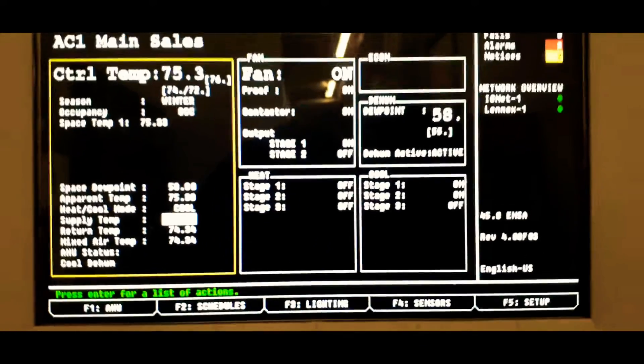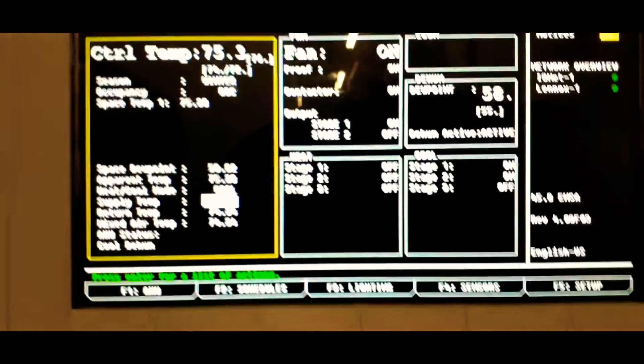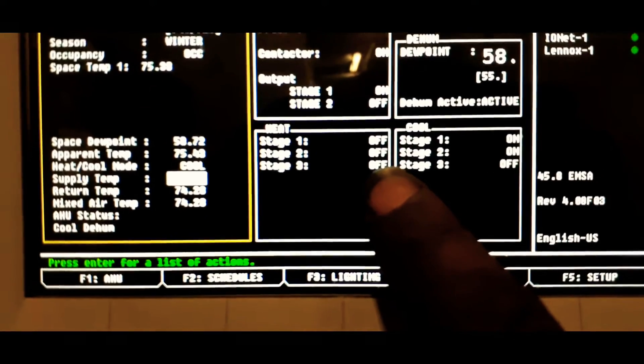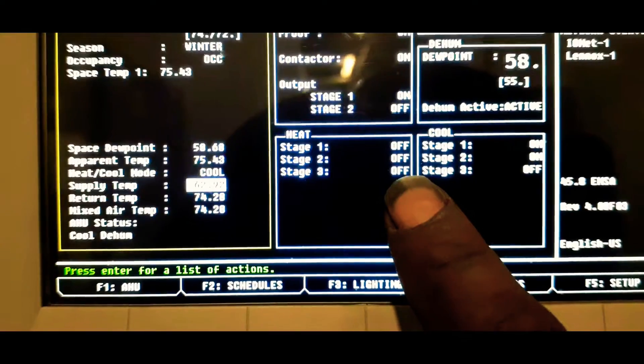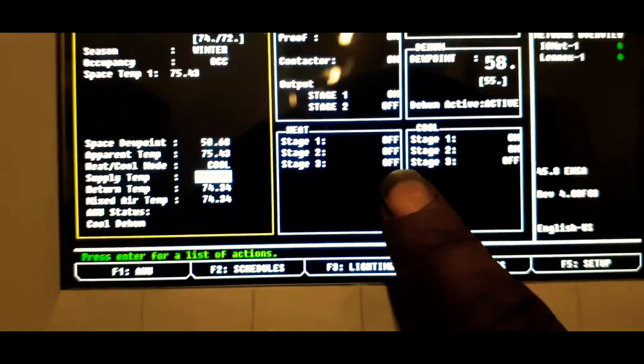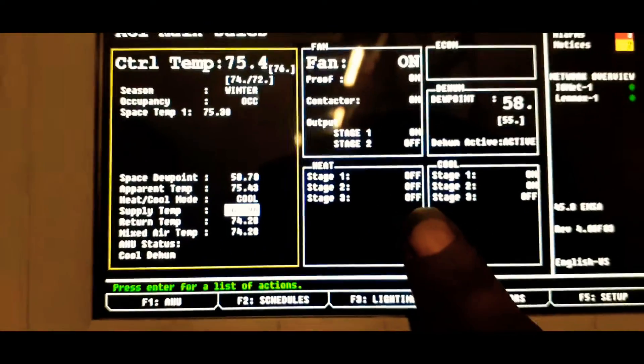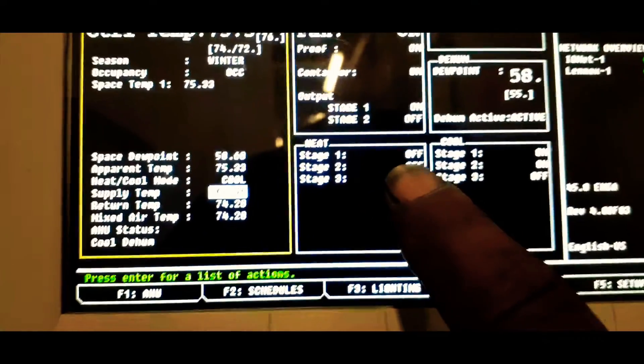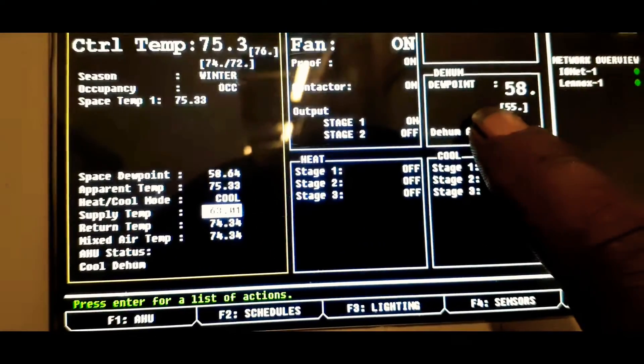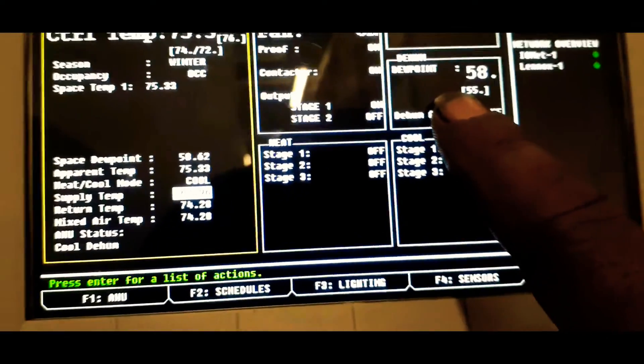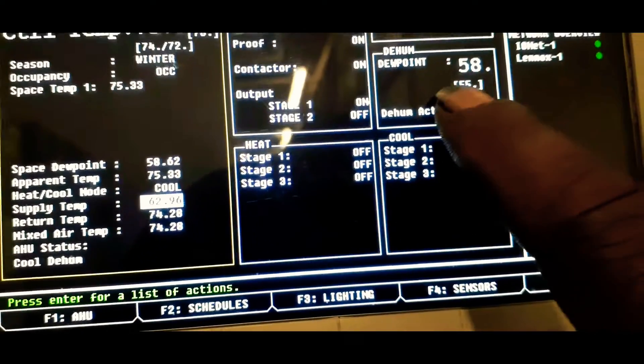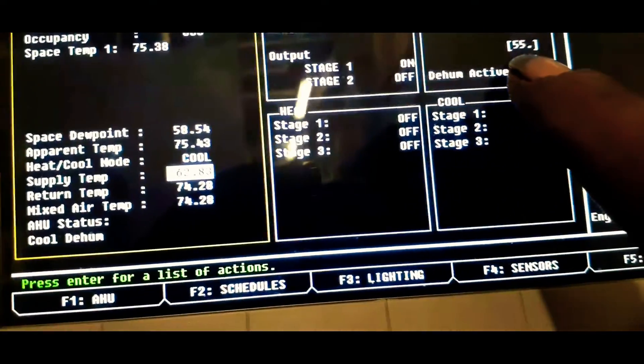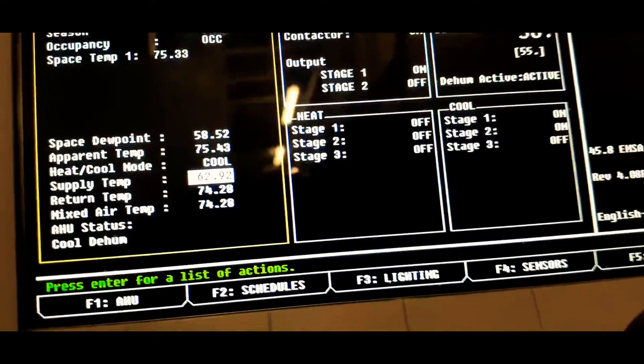All right, so our temp's dropping, and right now it says heat off. And that's mainly due to the heat reclaim is not running. Once we get down to 72 degrees, this will kick on and then we'll start drying out the air even more, the air. And as you can see, we just dropped another degree, dew point 58 now.